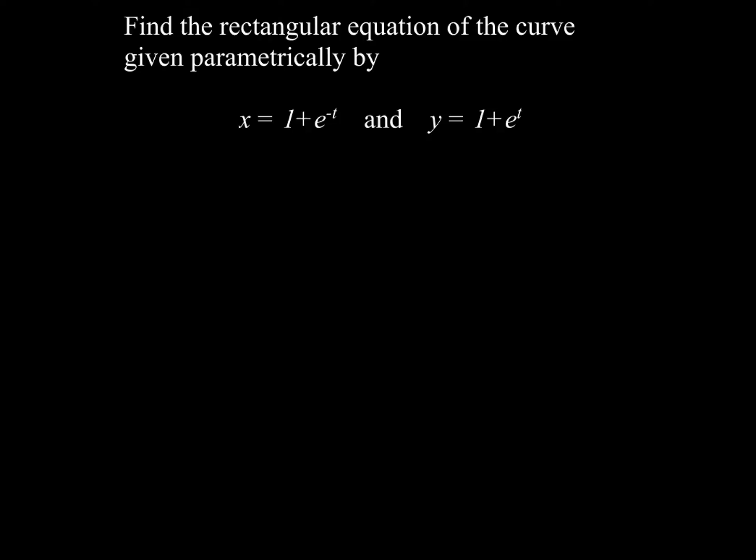Now what you're going to want to do here to get this one started is take the x equation and solve that for this piece right here, e to the negative t. So when you do that you'll get x minus 1 equals e to the negative t.